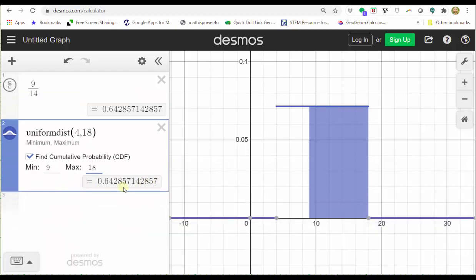Close the Desmos keypad. Notice how the probability shows below, which is the same as 9/14. Looking at the graph on the right, we also have the area that represents the corresponding probability. Again, we have approximately 0.6429.